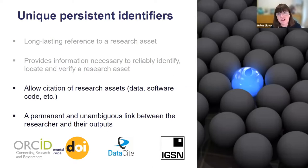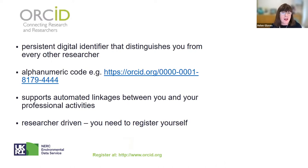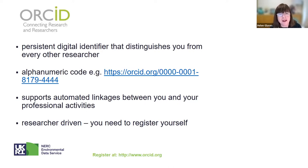Unique persistent identifiers allow citation of research assets — data, software, anything created as part of the research endeavor. They also provide a permanent and unambiguous link between the researcher and their outputs. This is facilitated by the use of a personal persistent identifier. One increasingly widely used example is ORCID, which is currently recommended by both NERC and UKRI, and is becoming increasingly mandated by a range of funding agencies and journals.